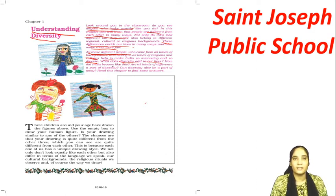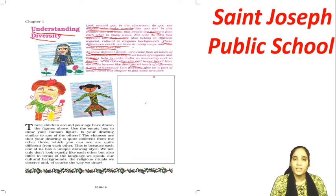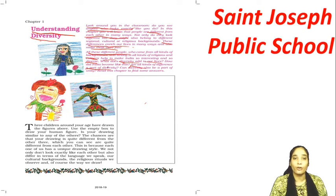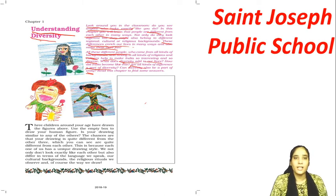How did India become so diverse? Are all kinds of differences a part of diversity — whether the difference in your looks, your regional culture, or your religious backgrounds? Are they all part of diversity? And can diversity also be a part of unity? Diversity means differences and unity means oneness. We will try to find out all these questions in this chapter.